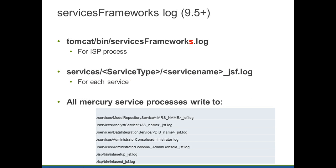In 9.5, we changed the services framework.log to services frameworks.log. This is in Tomcat bin, and only the ISP process writes to this file — it is again a Java service framework log. All the other services that write JSF logs are separated out, and those are under services slash service type, service name, underscore JSF.log. So if you look at your InfoHome services model repository service directory, you should find MRS name underscore JSF.log. This holds good for analyst service, DIS, and any other service created, as well as the admin console, InfoCMD, and InfoSetup. All errors related to these modules are written to separate underscore JSF.logs.